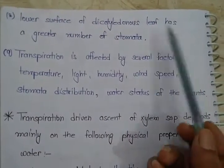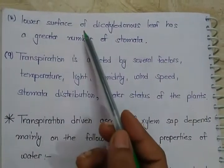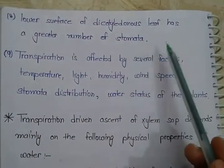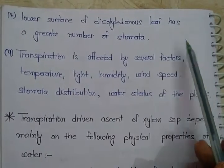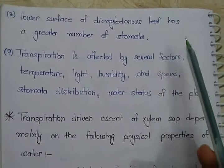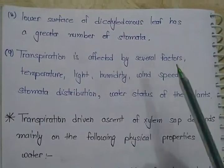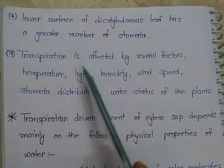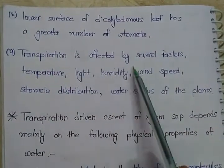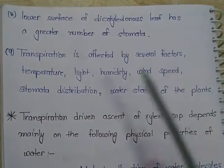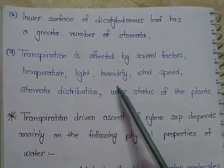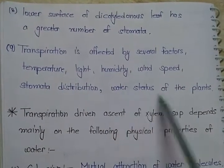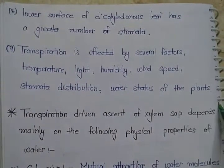In dicotyledonous leaves, the lower surface has a greater number of stomata, while in monocot leaves both sides have an equal number of stomata. Transpiration is affected by several factors like temperature, light, humidity, wind speed, stomata distribution, and water status of the plant.